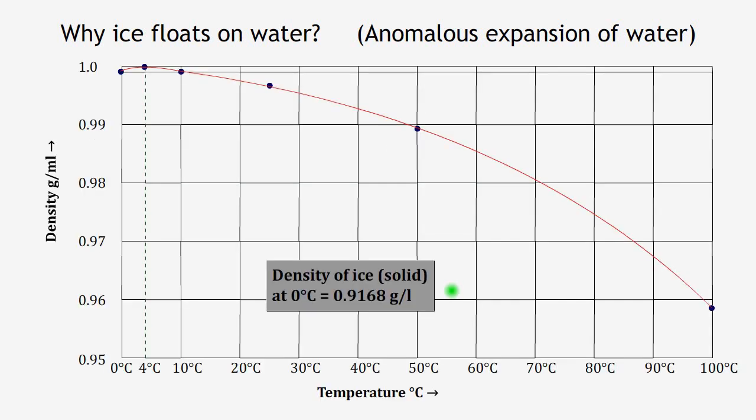Now let us see the density pattern of water at various temperatures. It is seen that water has maximum density at 4 degrees centigrade. In this graph, we see that density of ice is less than water, whatever the temperature of water is.